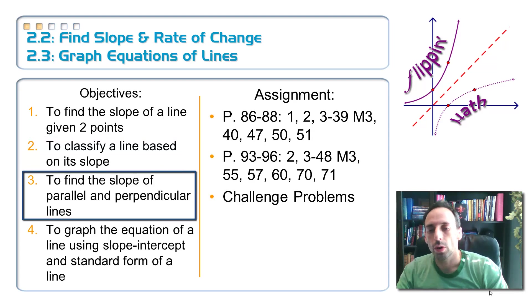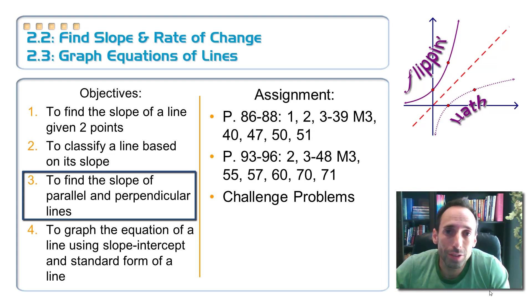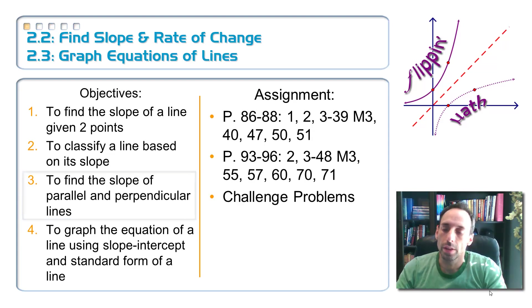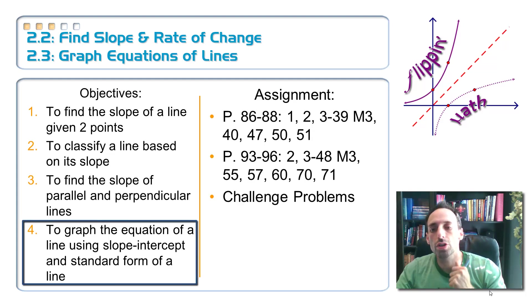Number three, we're going to be finding the slope of parallel and perpendicular lines. Again, that's something that you did in geometry and Algebra 1. You're probably even going to do it in pre-cal next year. And then finally, we're graphing the equation of a line if it was in slope-intercept or standard form.